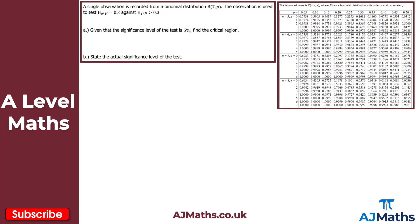Starting with question one: a single observation is recorded from a binomial distribution. The observation is used to test H0 for P equal to 0.3 against H1 for P greater than 0.3. For part A, given that the significance level of the test is 5%, find the critical region. The first thing we need to figure out is whether we have a one-tailed or a two-tailed hypothesis test — here we have a one-tailed test because H1 is P greater than 0.3.